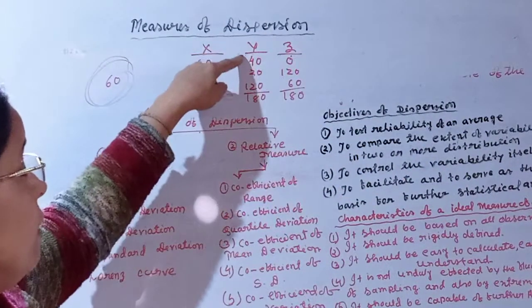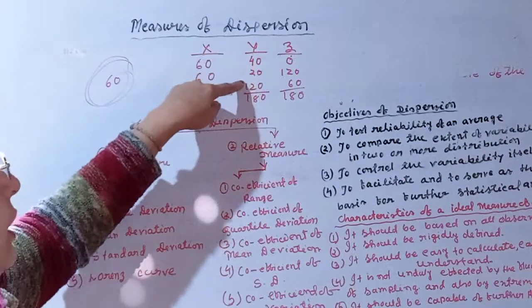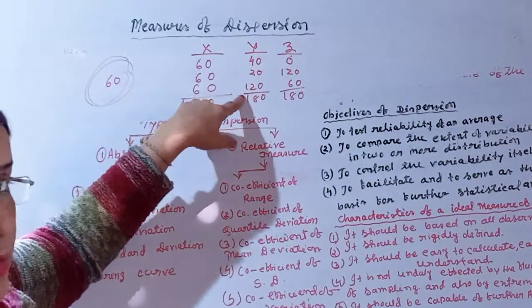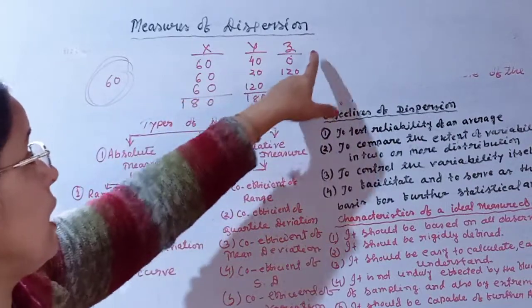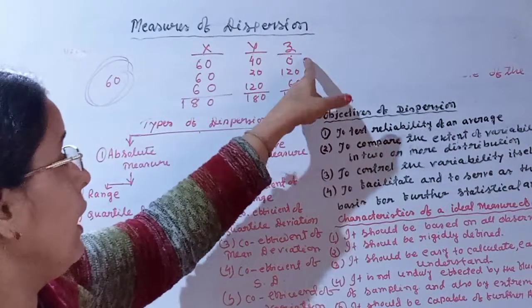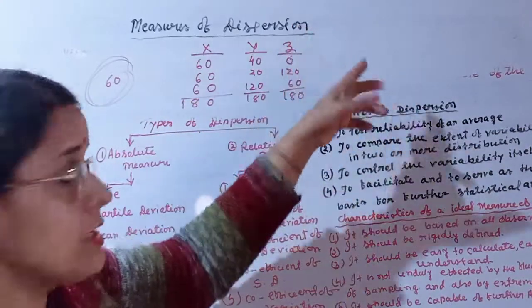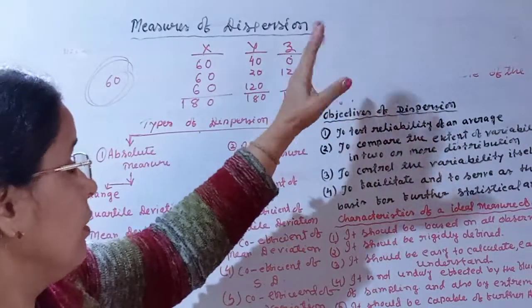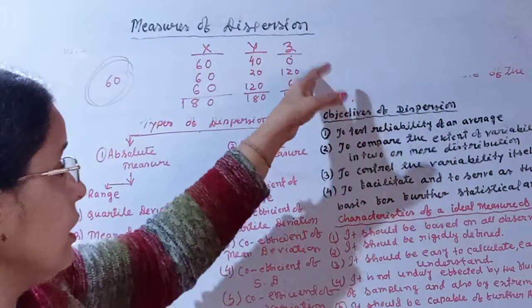In the Y series we have values 40, 20, and 120. In the Z series we have 0 and 60, showing different levels of spread around the same mean.